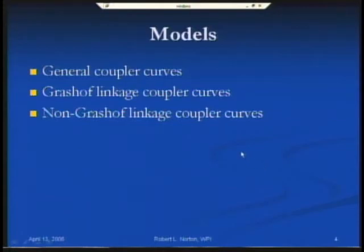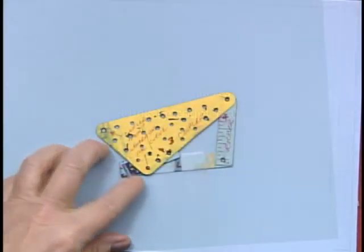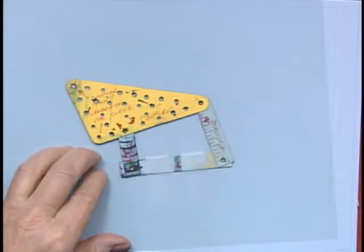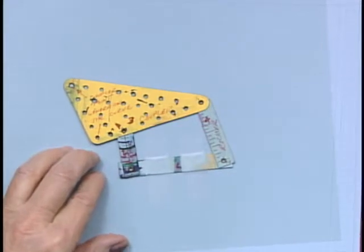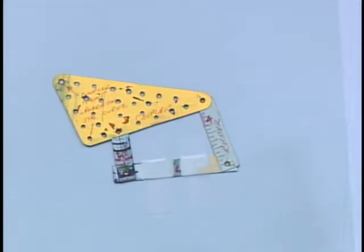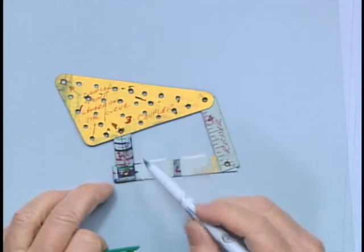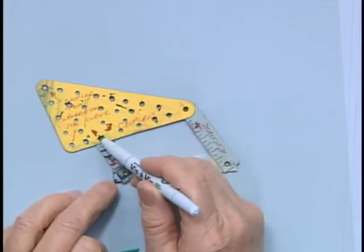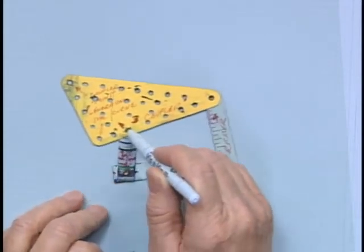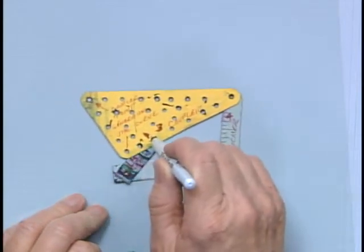Now I'm going to demonstrate these with a few models so you can get a sense of how these curves are generated. I've made up some simple cardboard models, and just as in my sketch I've punched the coupler full of holes so I can trace curves with a pen. This is link 2, and that is instant center 2-3 right there.